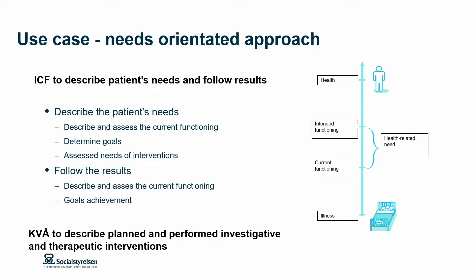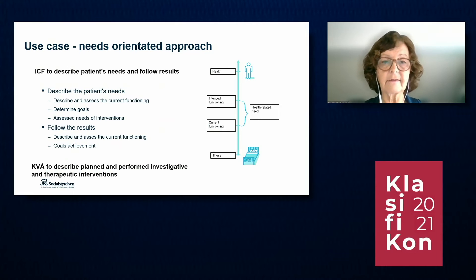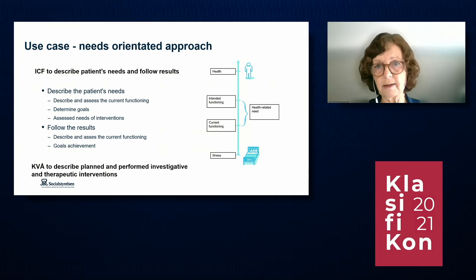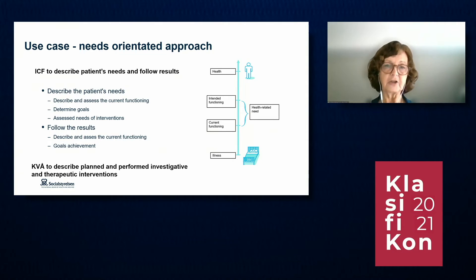The work started already in 2018, so it takes a long time before you can start collecting data. The National Board of Health and Welfare was commissioned by government to focus on needs for elderly persons and persons with disability within both social care and health care in the municipalities. We started to describe how to assess the patient's needs using a needs-oriented process. If you want to describe patient needs, you can't only use the diagnosis — you need to describe and assess the current functioning, decide the goal together with the patient, and then assess the needs for interventions. An important part is also to follow up the results of the treatment, using ICF to assess current functioning again and whether the goal has been achieved. KVO is also needed to describe the planned and performed interventions, both in the investigation/assessment and for the treatment.